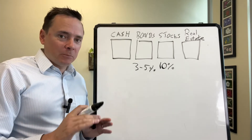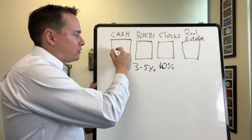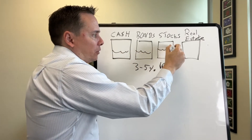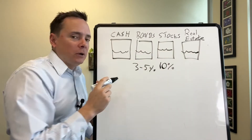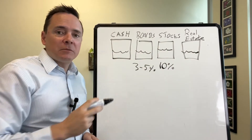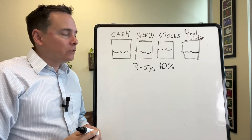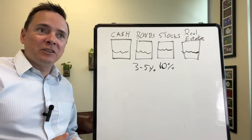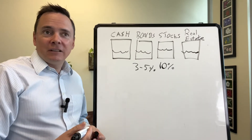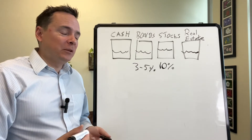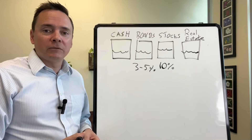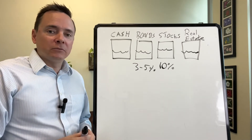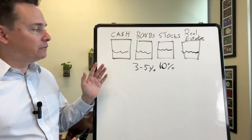The key to all of this is making sure each one of these buckets is filled up to the appropriate level. You want some money in cash. People ask me how much — I say anywhere from $10,000 to $30,000 is enough. Some people would argue maybe $50,000. A lot of it is just comfort. Some people are more comfortable with more money in their bank account, some want less. You can kind of figure that out for yourself.